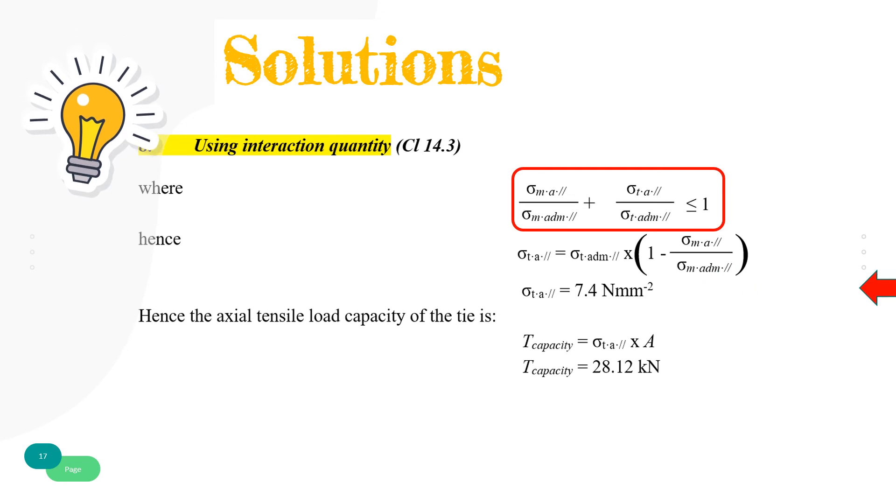The axial tensile load capacity of the tie is calculated by rearranging the formula of tensile stress: the applied tensile stress multiplied by area of 3,800 mm². Thus, the T capacity that the tie can support is 28.12 kN.